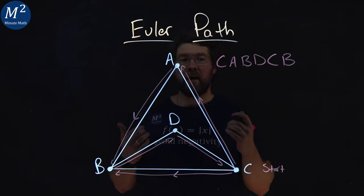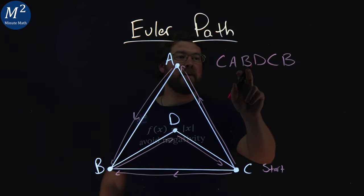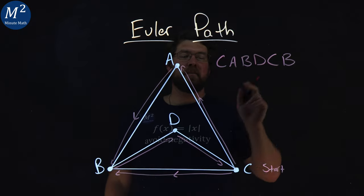And so we found an Euler path here that is C, A, B, D, C, B.